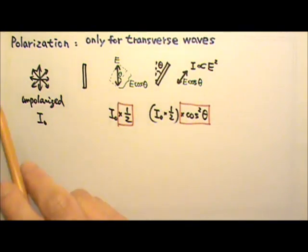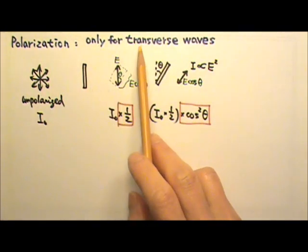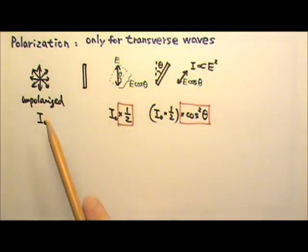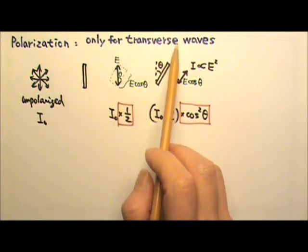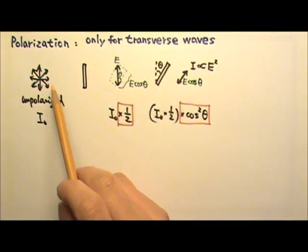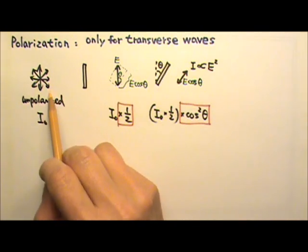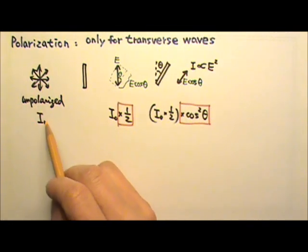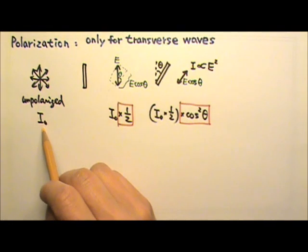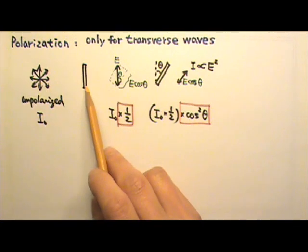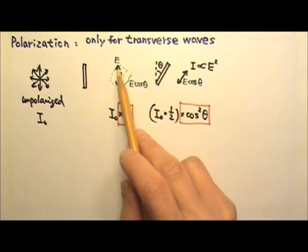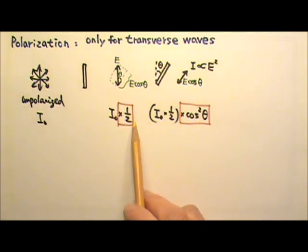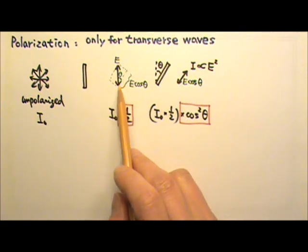Now let's review polarization. Polarization only happens to transverse waves — we cannot polarize longitudinal waves like sound. EM waves are transverse waves, so we can polarize EM waves like light. Starting with unpolarized light, the electric field points in all directions and the intensity is I₀. When this light goes through a polarizer, it comes out polarized with half the intensity, because only half the energy is oriented in the polarizer's direction.